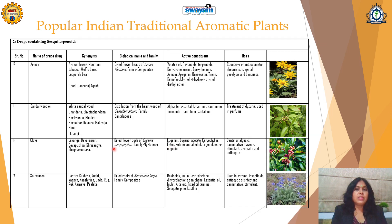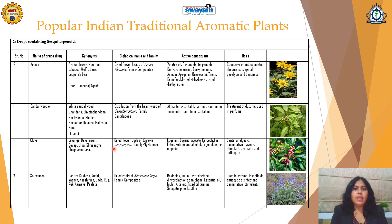After monoterpenoids, we move to sesquiterpenoids — this is another class of terpenoids. The most important plant from this class is Arnica, which is called as Mountain Tobacco or Leopard's Bane. In Unani it is called as Darwanj Akrabi, obtained from Arnica montana, Family Compositae. It contains olatel oils, flavonoids, terpenoids, and various other ingredients, and is found to be a counterirritant. It is useful in cosmetics, especially for hair growth and healthy hair, and used in massage oils for rheumatism and paralysis.